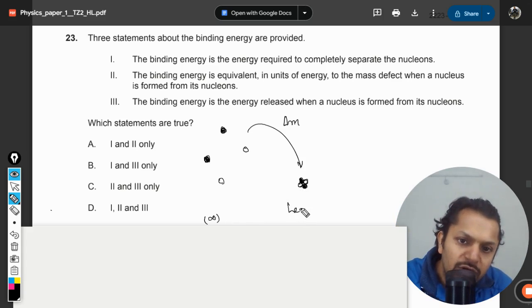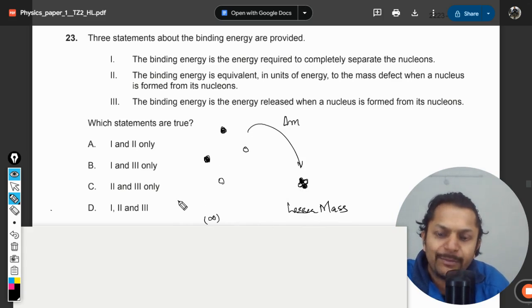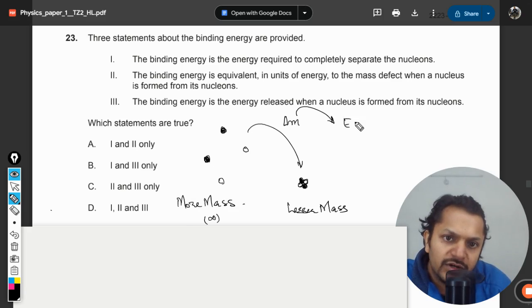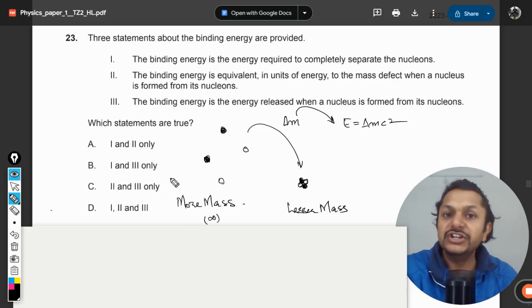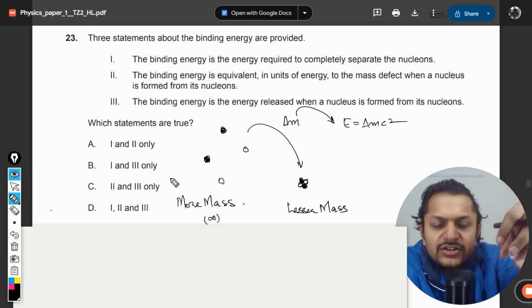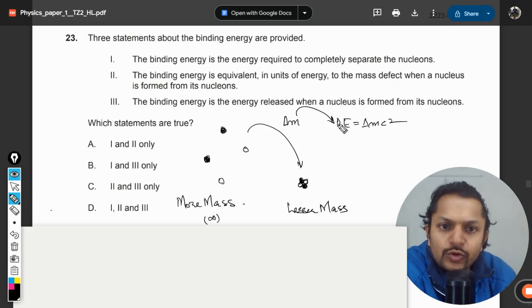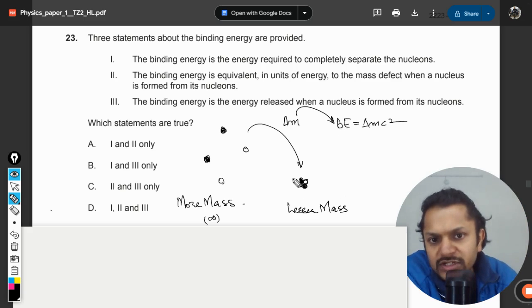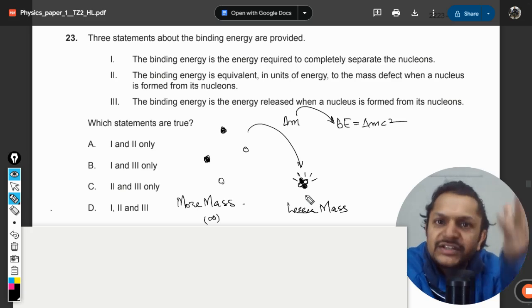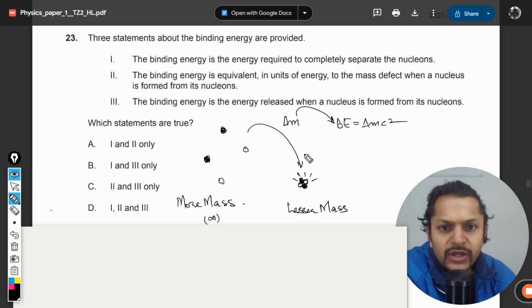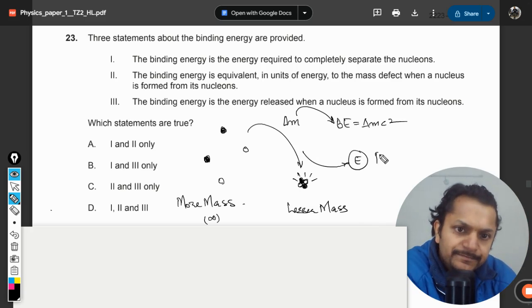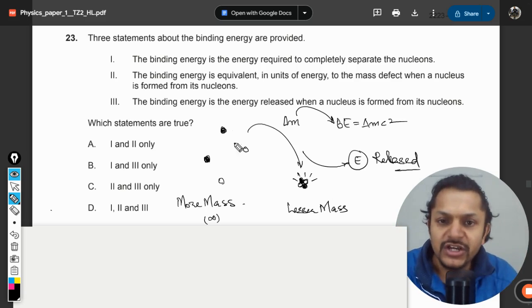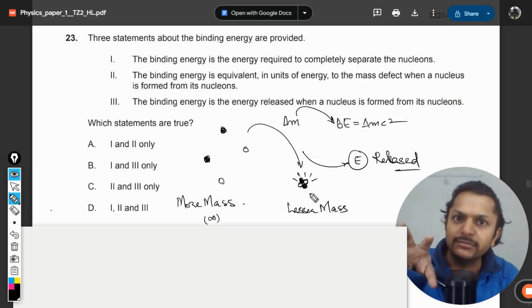So the first thing to be noted here is that the nucleus is having overall lesser mass and these nucleons separately they have more mass. This mass defect is now converted into energy, the formula given by Einstein. So this energy, this mass is converted into energy and this is known as the binding energy. So when a nucleus is created clearly the energy will be released. So energy is released here, okay, so you can say energy is given up, released.